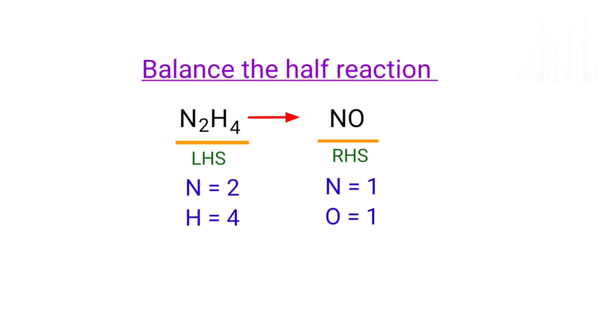Now we can balance the nitrogen atoms first. To do this, we need to put a coefficient of two in front of NO. The nitrogen atoms are balanced.